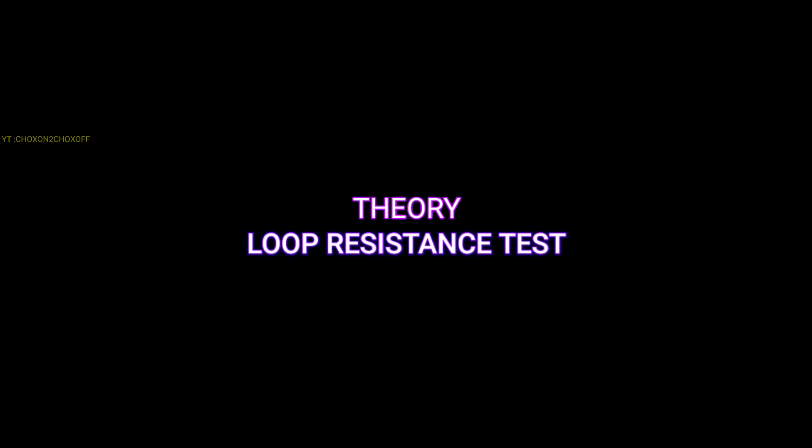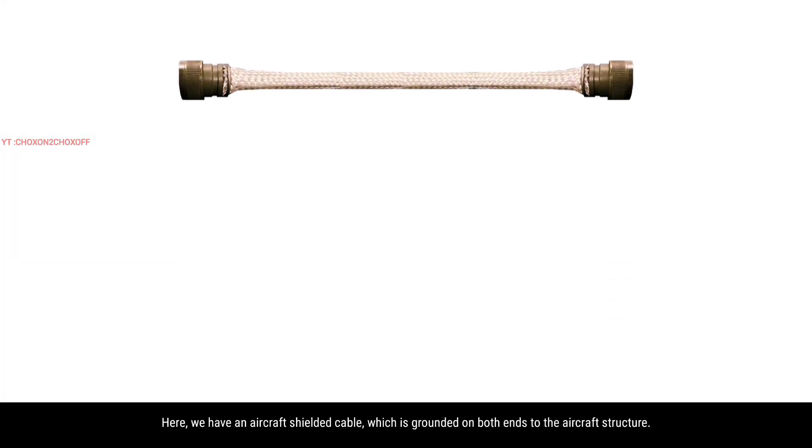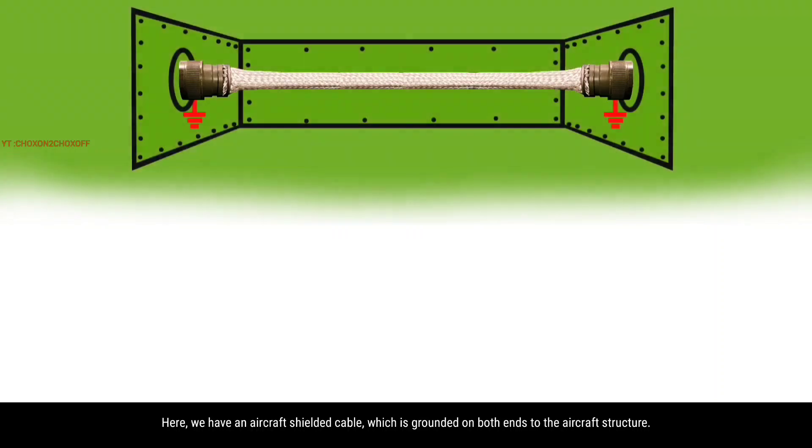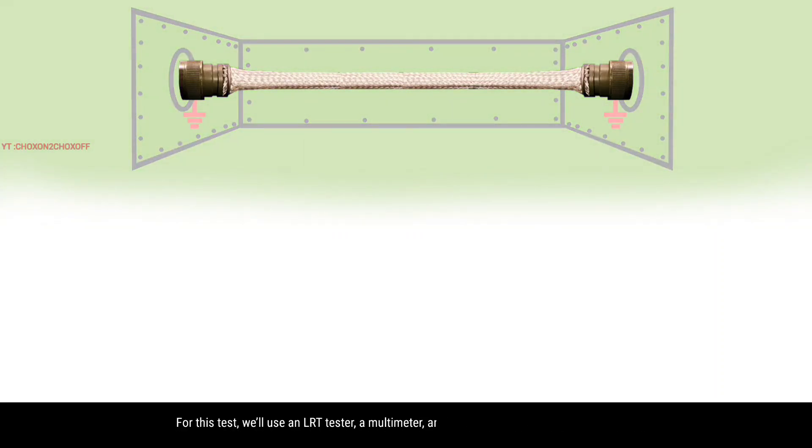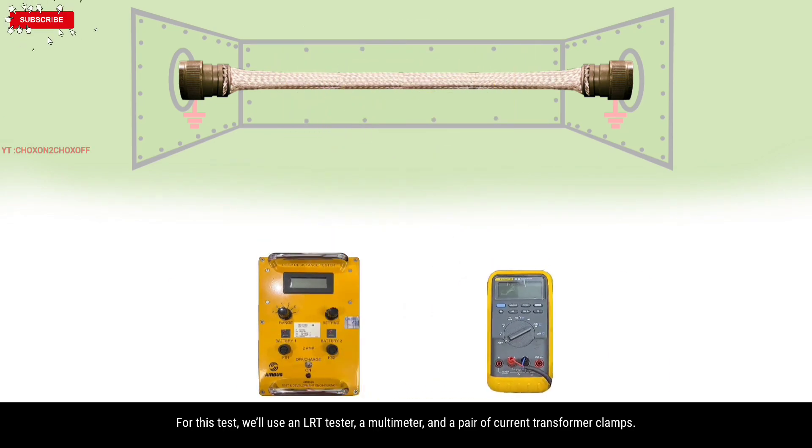Let's quickly understand the theory first. Here we have an aircraft shielded cable which is grounded on both ends to the aircraft structure. For this test we'll use an LRT tester, a multimeter, and a pair of current transformer clamps.